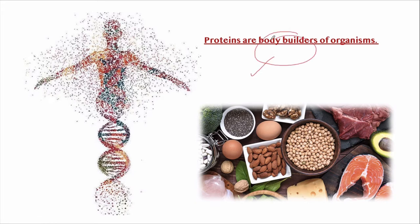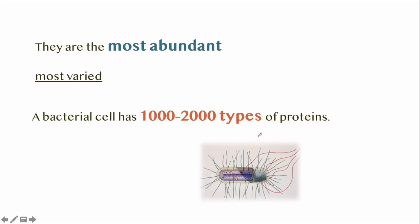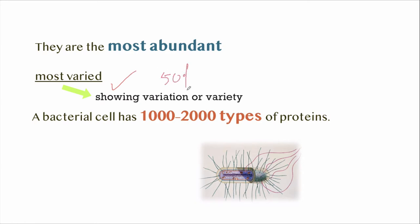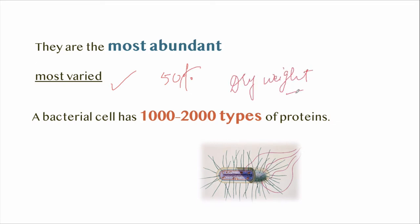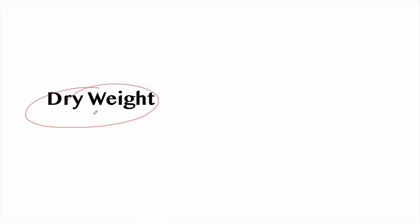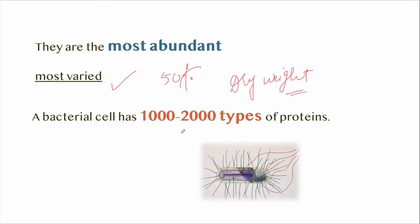Proteins are like machines that make all living things — whether virus, bacteria, butterflies, jellyfish, plants or humans — function. The human body consists of around 100 trillion cells, and each cell has thousands of different proteins. Proteins are the most abundant and most varied of the macromolecules of the cells, and they constitute about 50% of their dry weight.